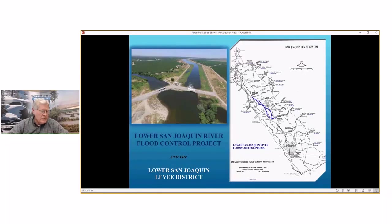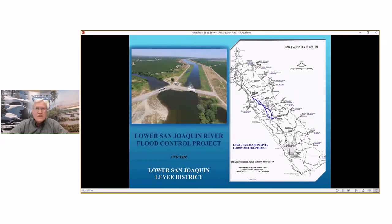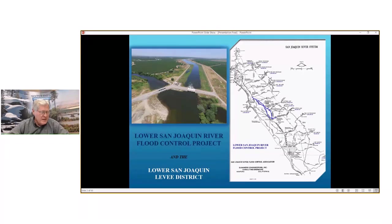The river and its tributaries have historically caused flood problems which have been a threat to life and property. Every interest along the river has provided a defense for themselves by building levee embankments to divert floodwaters away from their interests, which adversely affected other parties. This approach offered no solution toward a general plan of flood protection. The solution occurred through the activities of federal, state, and local governments, and most importantly, the efforts of the landowners affected by the river. Flooding problems have been lessened but not eliminated.